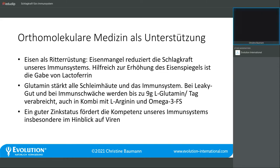Ganz wichtig für alle Schleimhäute und das Immunsystem selbst ist die Aminosäure L-Glutamin. L-Glutamin wird vor allem bei Leaky-Gut-Patienten verabreicht, also bei Darmdurchlässigkeit, aber auch bei Immunschwäche. Wenn jemand ständig infektanfällig ist, arbeitet man mit 9 Gramm L-Glutamin pro Tag. Das kann man kombinieren, zum Beispiel mit L-Arginin, einer weiteren Aminosäure, und vor allen Dingen auch mit Omega-3-Fetten, die wichtig sind für die Pflege unserer Schleimhäute und die Schlagkraft des Immunsystems.